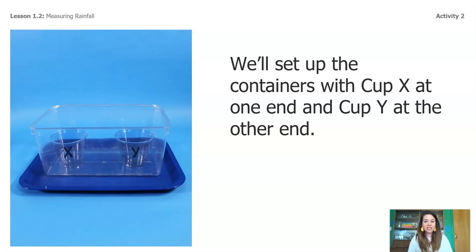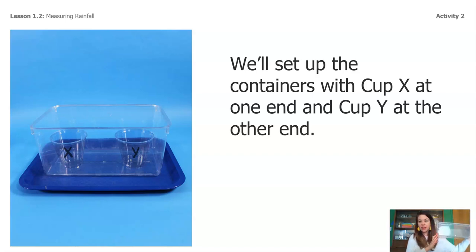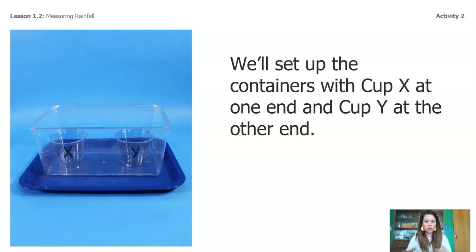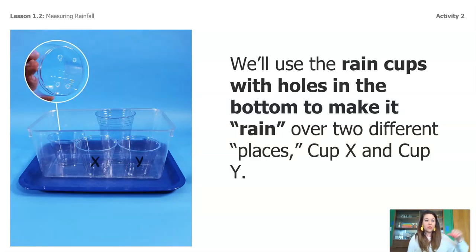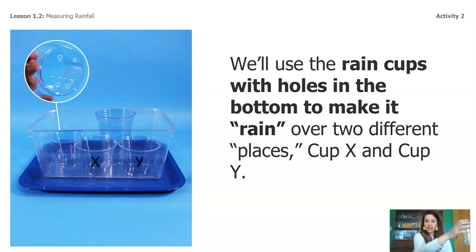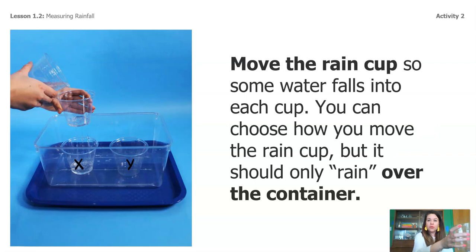Here's what we're going to do. We're going to set up the containers with cup X at one end and cup Y at the other end — those are the two identical cups. I've marked one X and one Y, and we're going to put them into the container that's allowed to get wet: a bucket, sink, bathtub, or outside on a flat surface so they don't tip over. Then we're going to use the rain cup — the container with holes punched in the bottom — and pour some water into it to make it rain over cup X and cup Y.